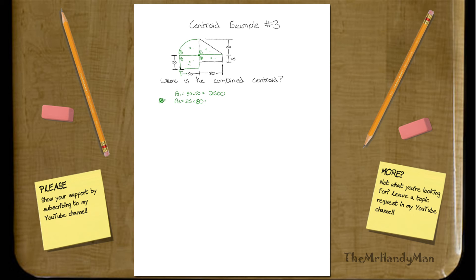A1 is going to be 50 times 50. Then A2 is going to equal 25 times 80. Let's calculate that out. That's 2,500 units, whatever that is. This is 25 times 80, which is 2,000.